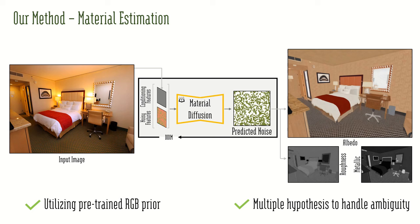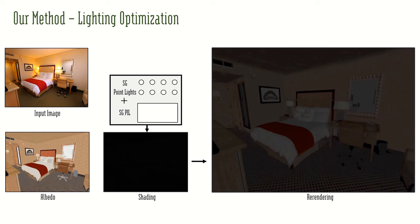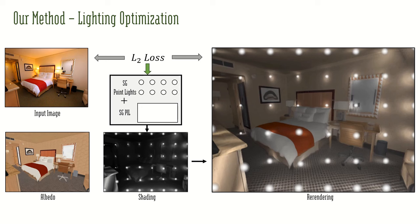Using our predicted materials, we optimize for the lighting of the scene. We use 48 point light sources with multiple spherical emission profiles and a global pre-integrated environment lighting. We initialize the point lights in a grid back-projected to 3D using estimated depth, and optimize for both position and emission parameters using a reconstruction loss.